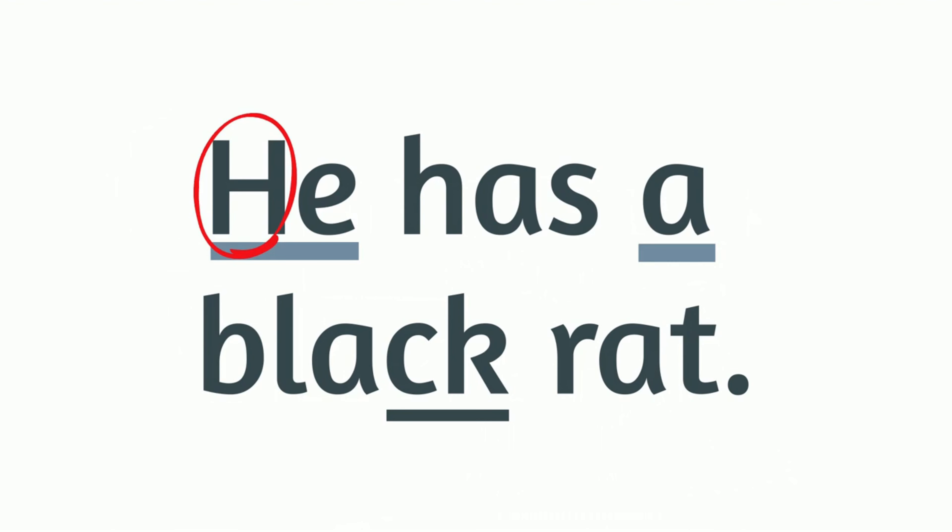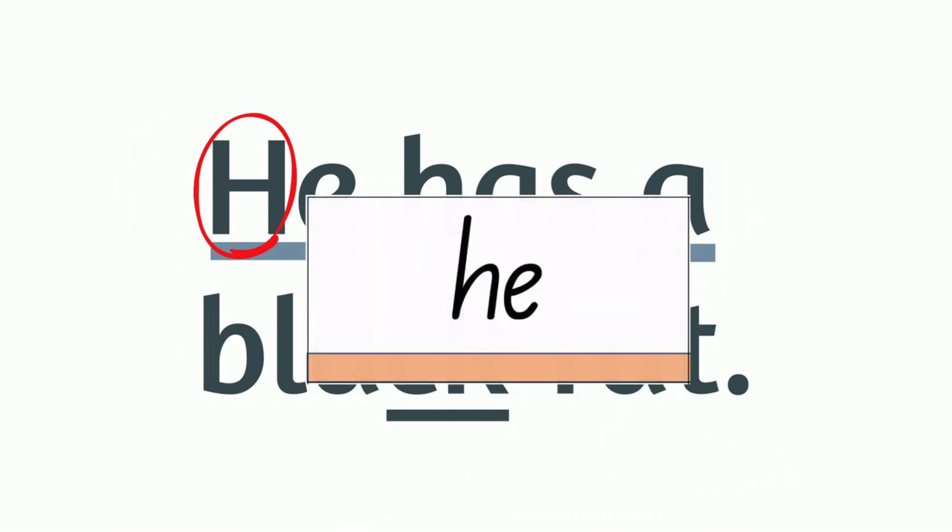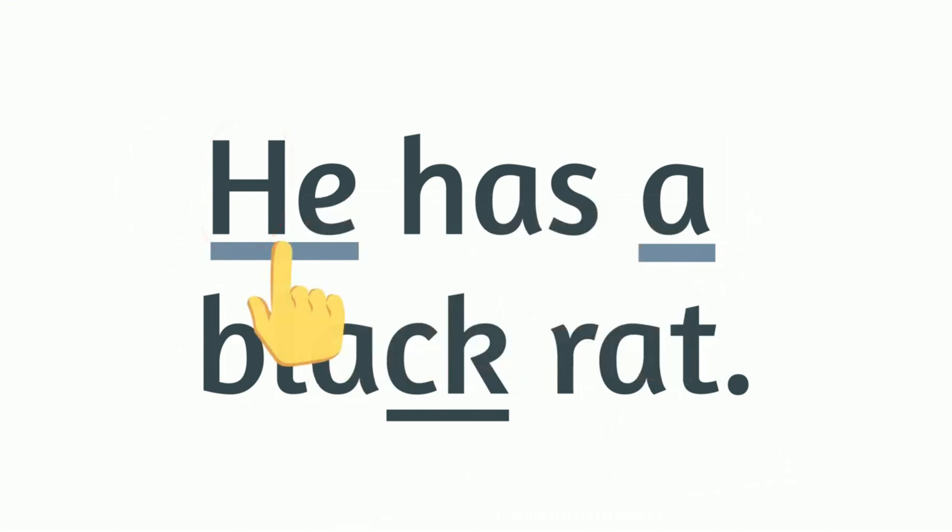This sentence begins with a capital letter too, which might make it tricky for us to recognize our tricky word 'he'. But that's what it says: He has, now remember the buzzing noise at the end of those short words, has a black rat. Put it together smoothly: He has a black rat. We already know it has a capital, but it also finishes with a full stop.